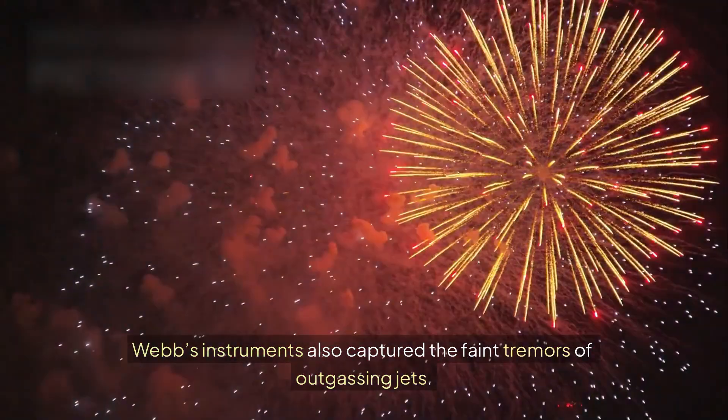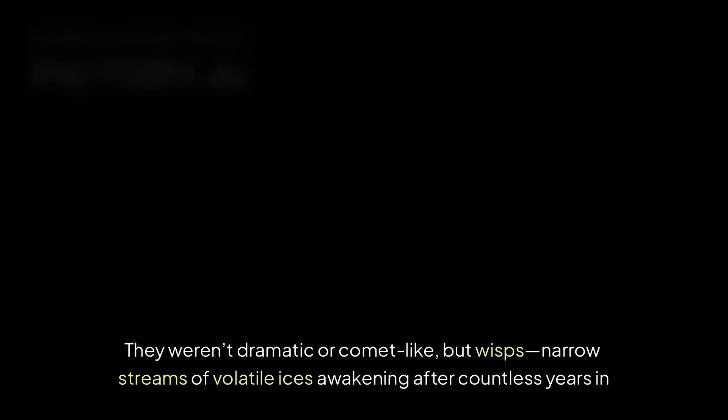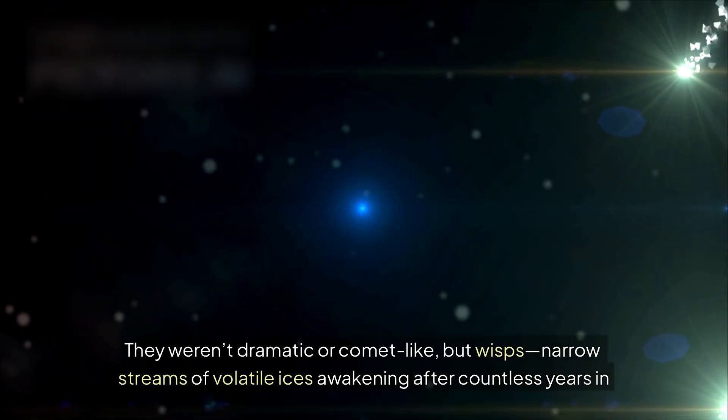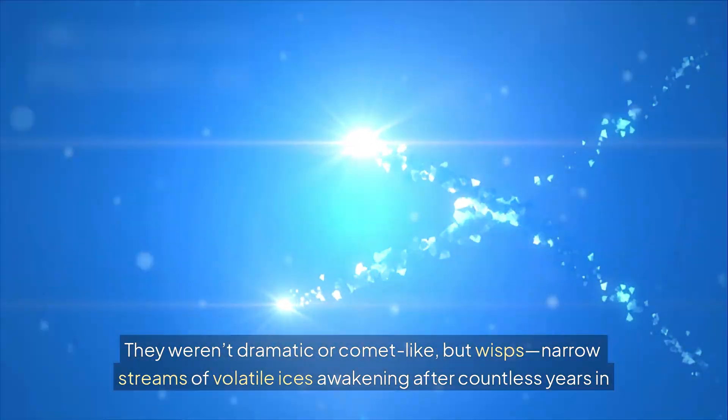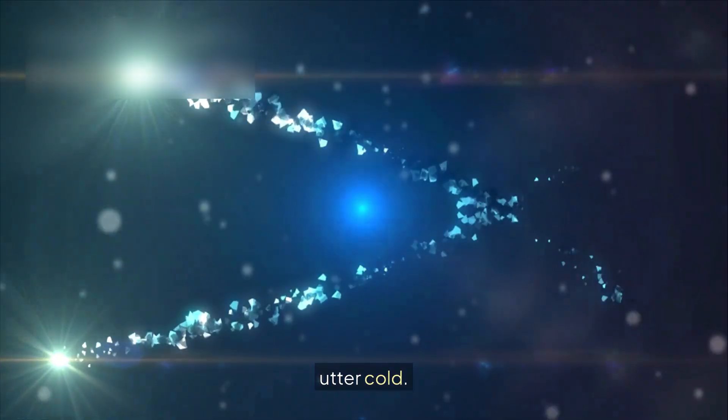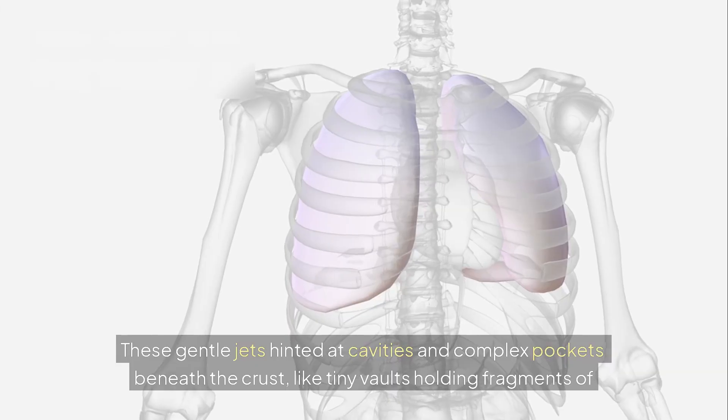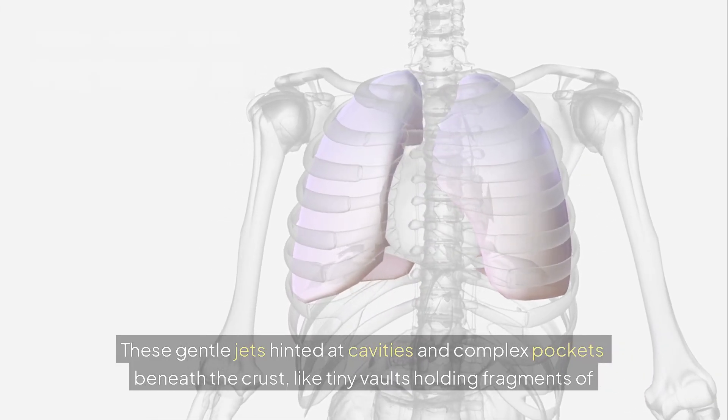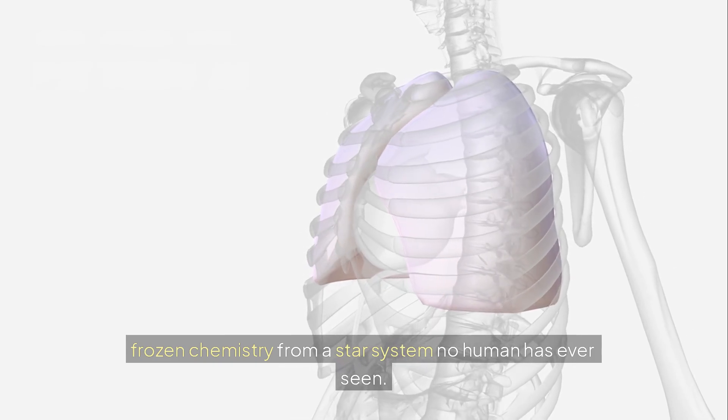Webb's instruments also captured the faint tremors of outgassing jets. They weren't dramatic or comet-like, but wisps, narrow streams of volatile ices awakening after countless years in utter cold. These gentle jets hinted at cavities and complex pockets beneath the crust, like tiny vaults holding fragments of frozen chemistry from a star system no human has ever seen.